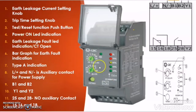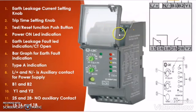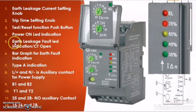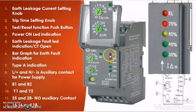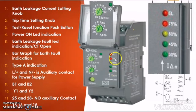The fourth thing which you will find on the ELR is a power on LED indicator. Its function is to give indication that there is power in the ELR and the ELR is active. The fifth thing is the earth leakage fault LED indication — when there is an earth fault it will show a red LED indication that the earth leakage relay has tripped. The sixth thing which you will find on the ELR is a bar graph for earth fault indication.